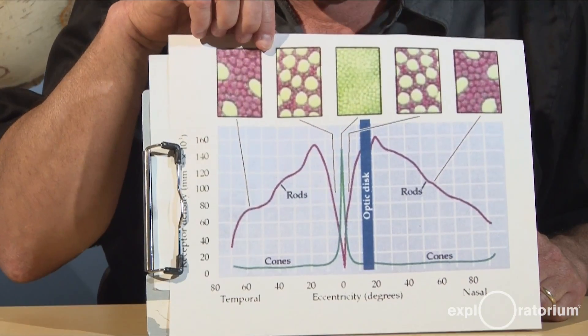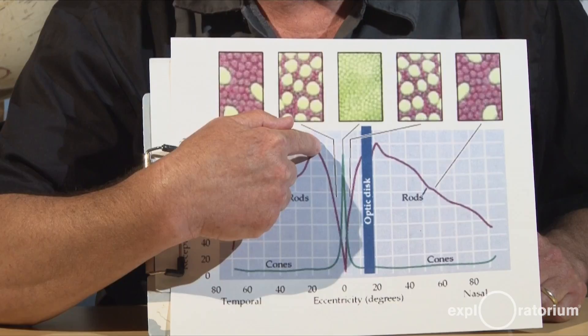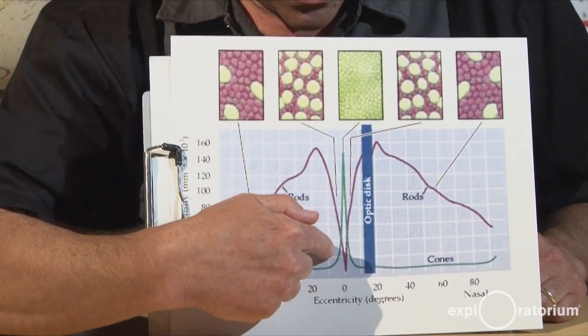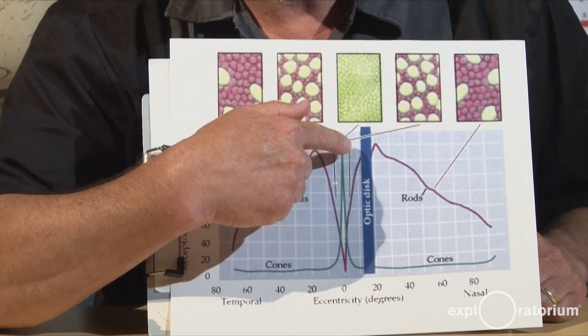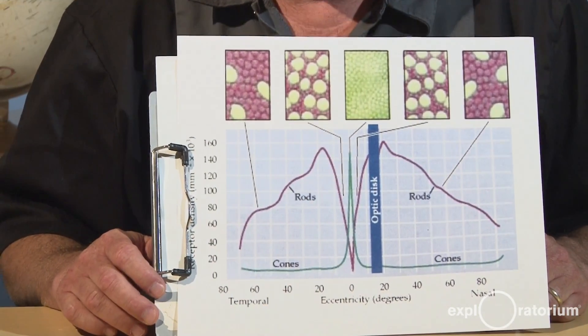The number of rods go up substantially, but there is a point at which the rod number and density goes way down and the cone number goes way up. That's only in the very center of your eye. That's called the fovea.